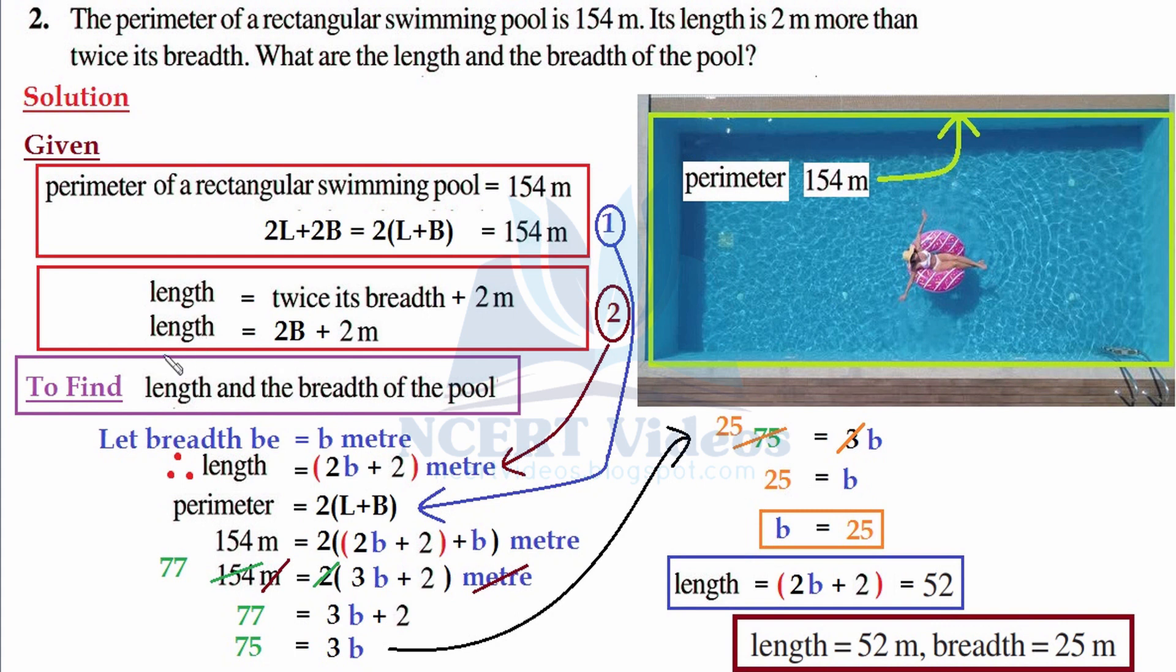So the question may arise: why we just took the variable as breadth? Why we didn't take it for length, that is small l? Well, you could have taken that as well, but we try to take that quantity which is independent.